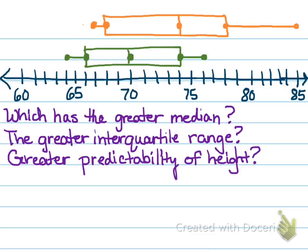Remember, median is the middle number. So if we look at our data points, we can tell that the basketball player height is going to have the greater median. So it's basketball.